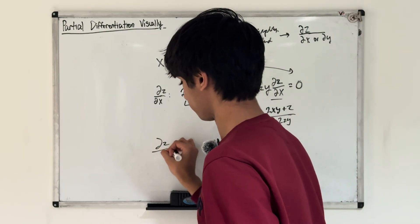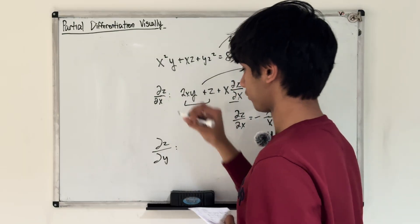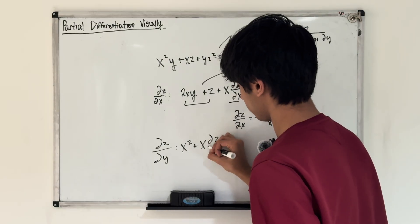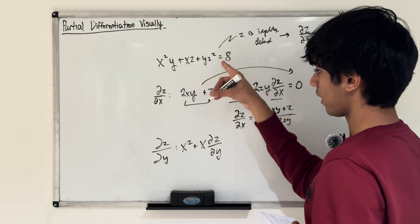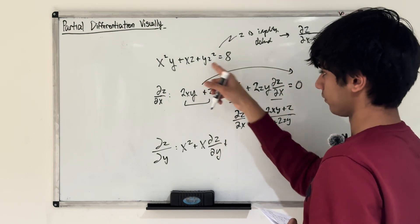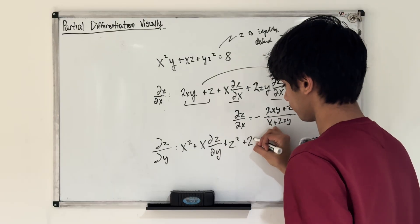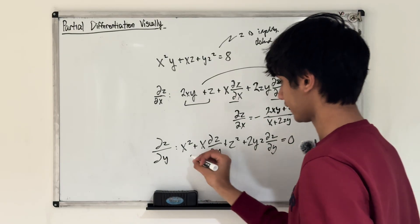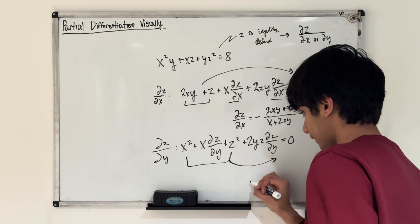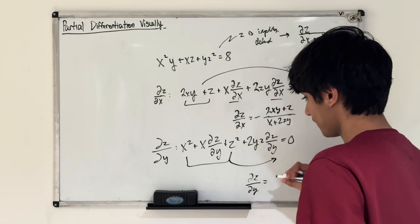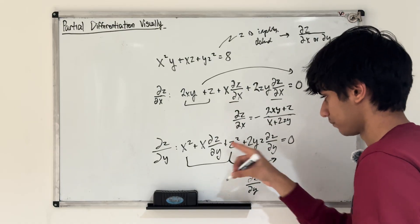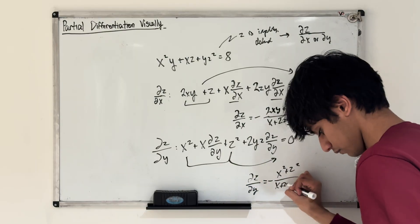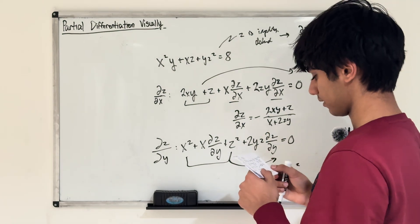Now the partial of z with respect to y: similar process, except now differentiating for y. x squared is constant, so x squared term remains; x is constant so x·∂z/∂y. For yz squared: product rule gives z squared plus y·2z·∂z/∂y, equals 0. Collect and move terms over, and we get that ∂z/∂y equals negative (x squared plus z squared) over (x plus 2yz). That's how we do implicit partial differentiation.